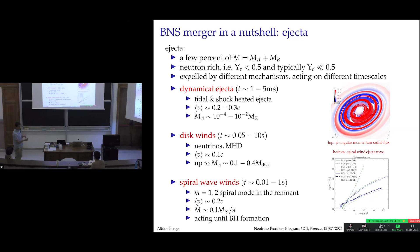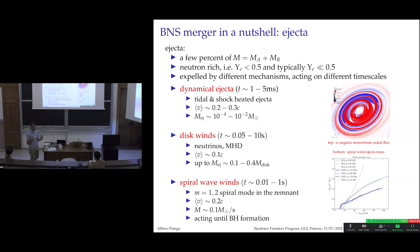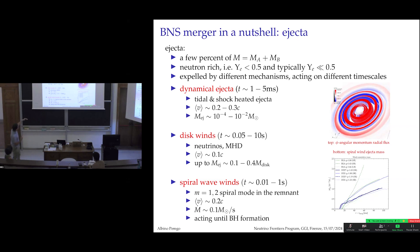Then we have winds. If the central remnant has collapsed to a black hole, a disk forms, and on the viscous timescale — where neutrinos matter a lot — between 10 and 40 percent of the disk mass can be expelled through these disk winds. There is also something in between: if we don't have immediate black hole formation but a massive neutron star, spiral waves develop that are very efficient at transporting angular momentum, and their properties are intermediate between the two. This is where neutrinos can play a major role.